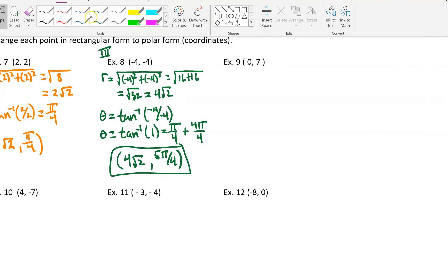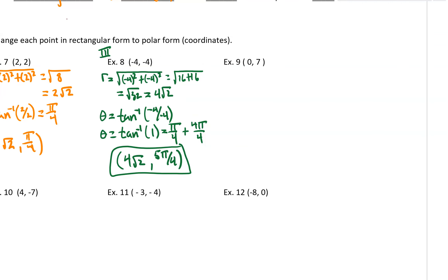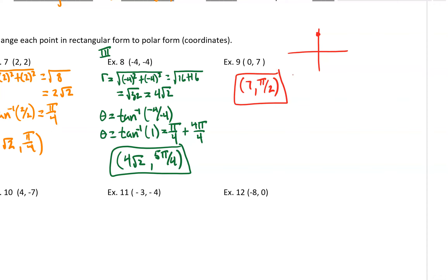For (0, 7): x is 0, y is 7, so the point is on the positive y-axis. r = 7 and θ = π/2. We don't need to do any more work — when you're on an axis, either x or y is 0, making the answer straightforward.